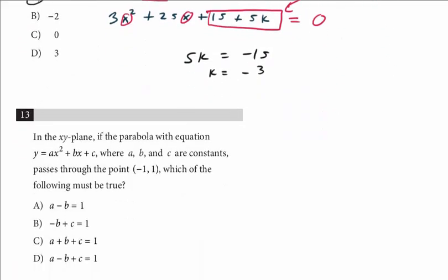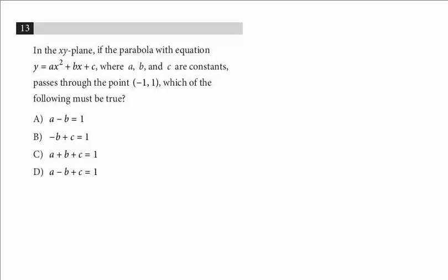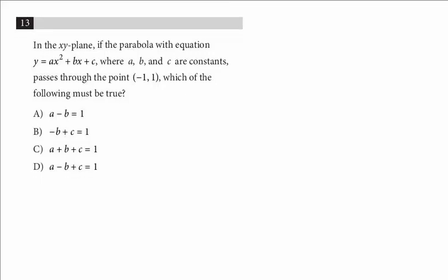Let's take a look at one more question in this video. It's question 13. In the xy-plane, the parabola with equation y = ax² + bx + c, where a, b, and c are constants, passes through the point (-1, 1). Which of the following must be true?